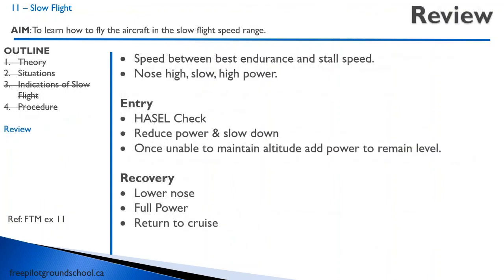Let's review. Slow flight is the speed range between the best endurance speed and the stall speed. It is characterized by a nose-high attitude, slow airspeed, and high power setting. On entry, begin with a HAZEL check and good lookout, reduce power and slow down, and once unable to maintain altitude, add power to remain level. To recover, lower the nose, apply full power, and return to cruise.